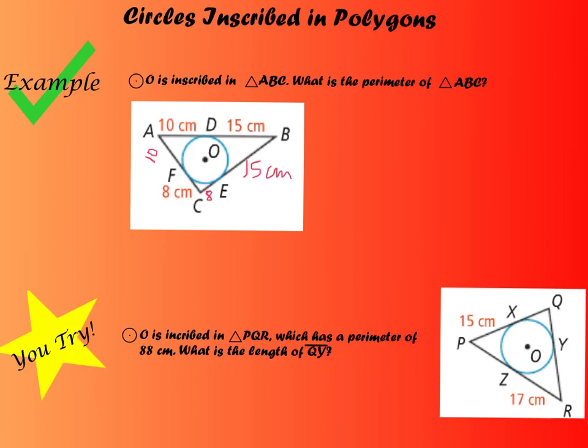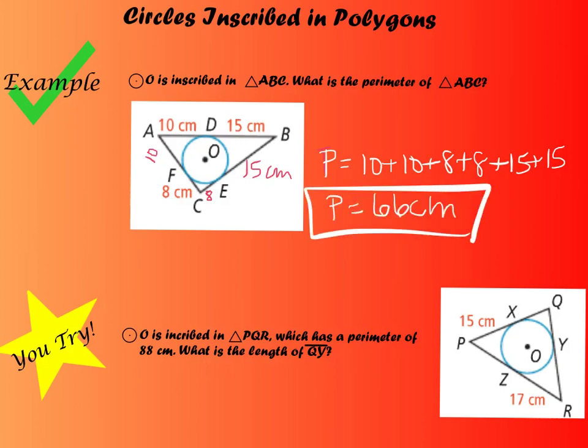So if I have all of that information, then to find the perimeter of my triangle, I just have to add up all of these lengths. So my perimeter is going to be 10 plus 10 plus 8 plus 8 plus 15 plus 15. I get a perimeter of 66 centimeters. And again, the important thing to know is that with each of these corners, if you have a 10 here, you'll have a 10 here. If you have an 8 here, you'll have an 8 here. And this corner, if you have a 15 here, you'll have a 15 here. So then a very similar problem for your You Try, go ahead and bring that to class, please.